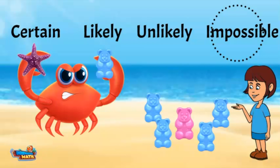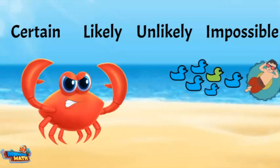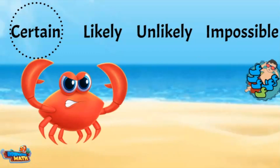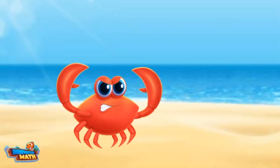I also like green chewy bears, but that would be impossible to choose from this group of bears because there are no green bears in the group. Thanks for sharing! Look at that baby out there floating — he is trying to catch one of those floating objects. He is certain to grab a duck because all of the floating objects he is grabbing for are ducks. There is no other choice in this group.